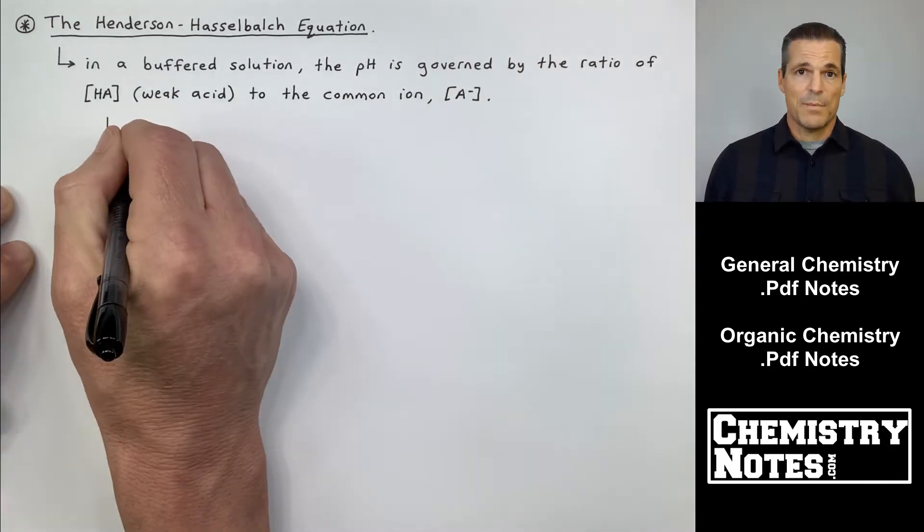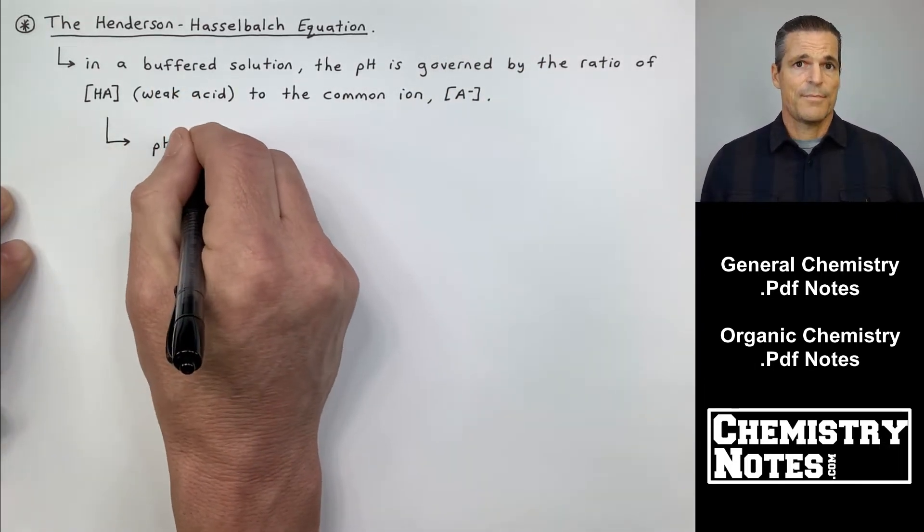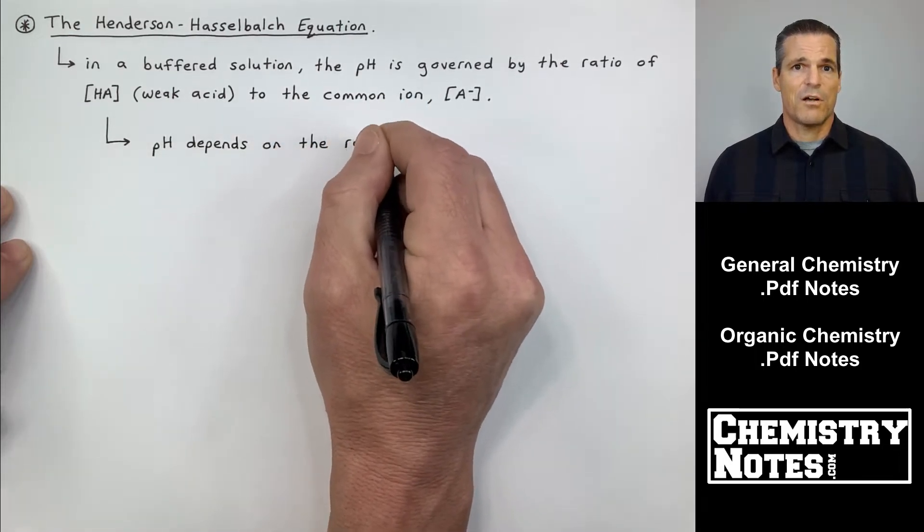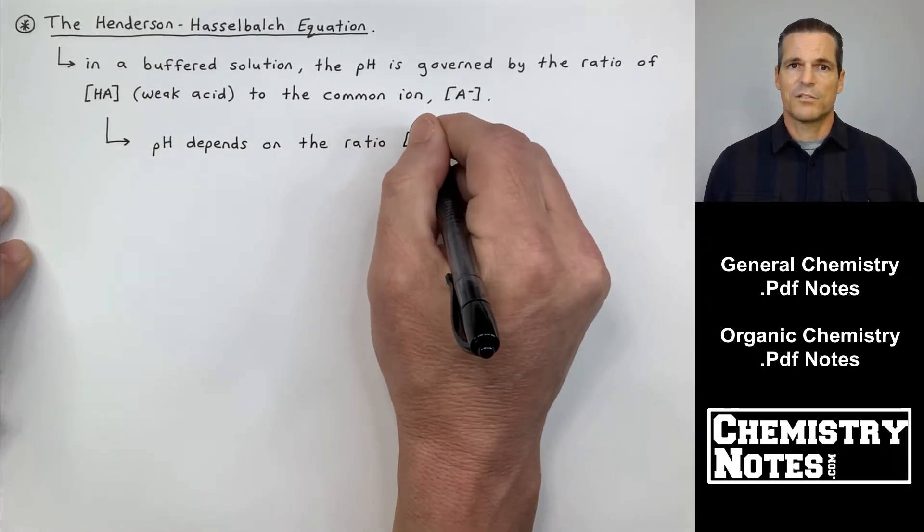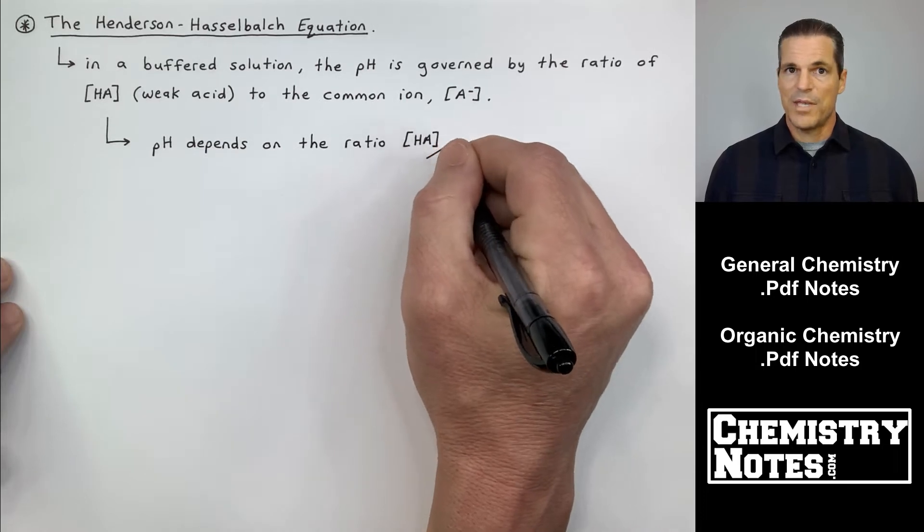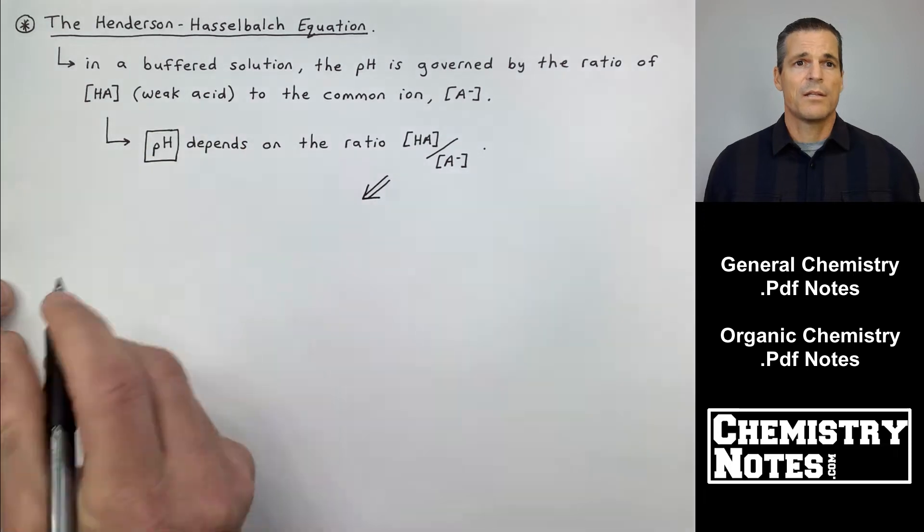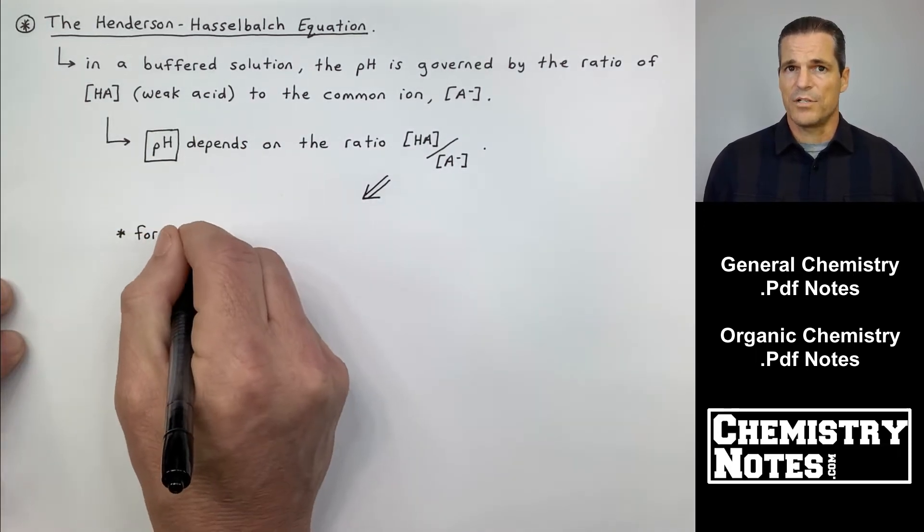And we've been doing a lot of sample problems to kind of illustrate this. Now usually we use ICE tables or the ICE method to solve our equilibrium expression to solve for H plus and then get a pH value. I also mentioned at the end of the last video that we have a shortcut called the Henderson Hasselbalch equation.